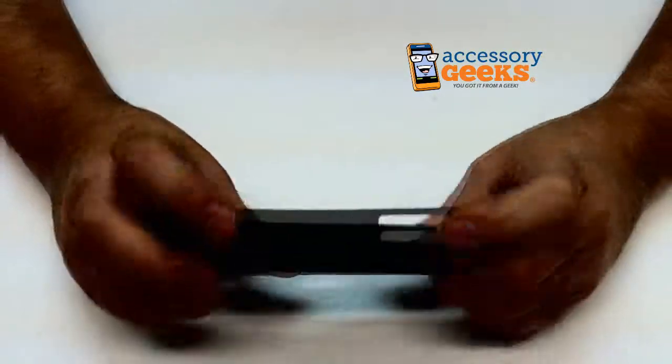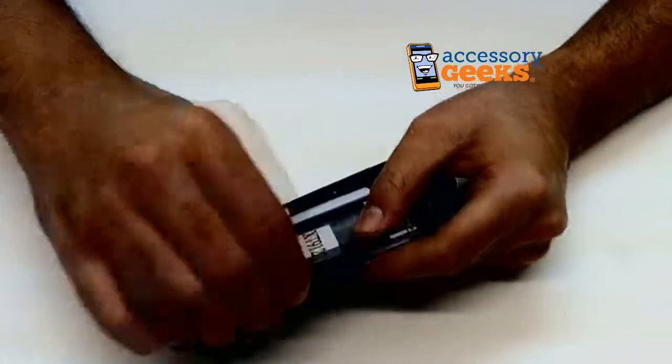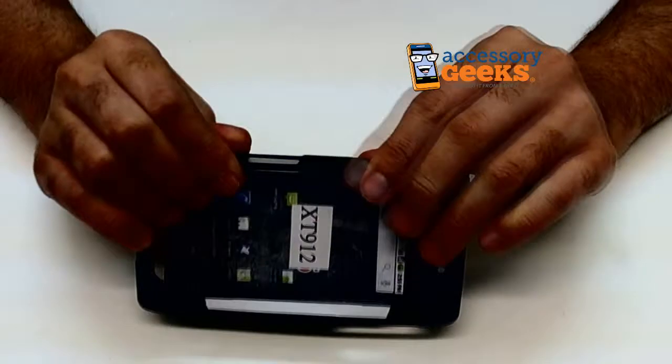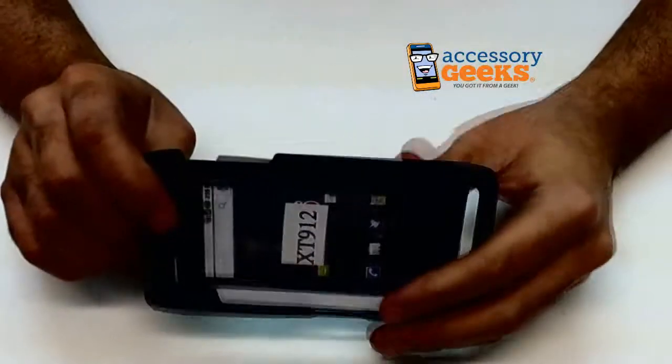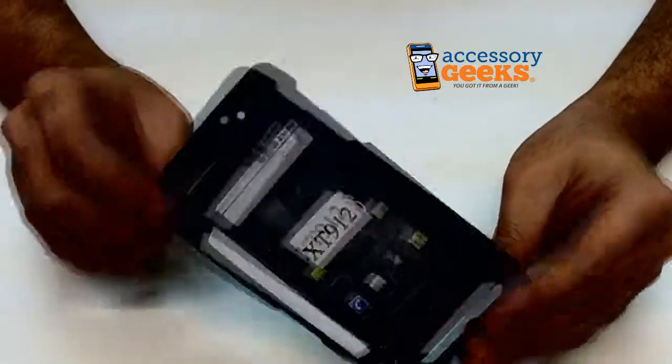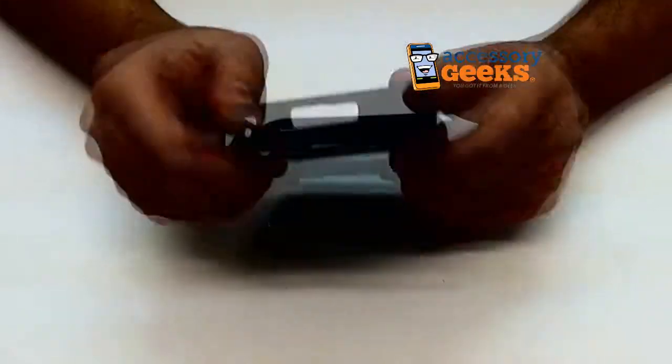This case gives you full access to all your buttons and ports. Oh, of course I didn't get it correct. I'm not exactly sure where all the buttons and ports are, but I'm going to make a good educated guess—this is the camera, speaker, and flash.